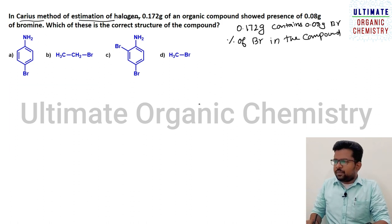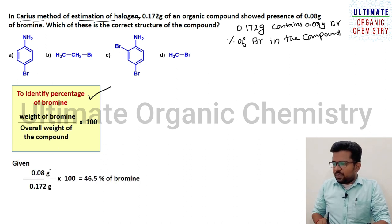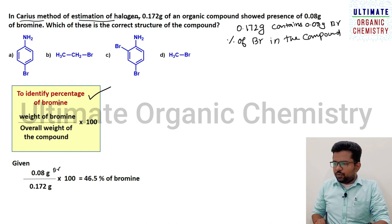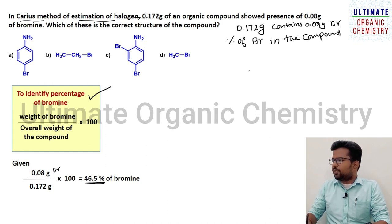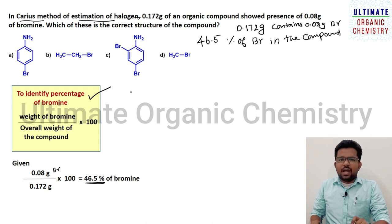To find the percentage of bromine, use the formula: weight of bromine divided by overall weight of the compound, multiplied by 100. The given value is 0.08 gram of bromine divided by 0.172 gram, multiplied by 100, which gives 46.5% bromine. So the given compound has 46.5% bromine. Our duty is to find which compound has 46.5% bromine — that will be the answer.